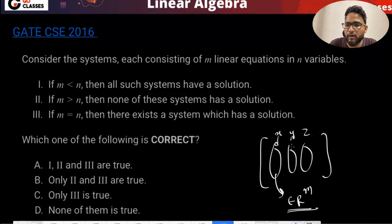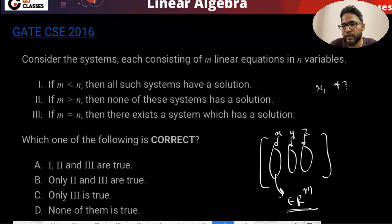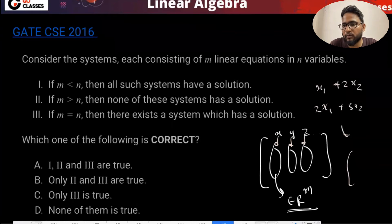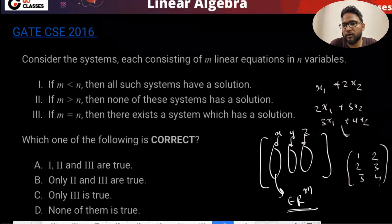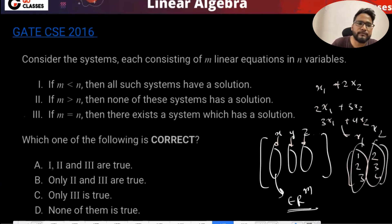Every variable represents just one column. So if you have x1 plus 2x2, and another equation 2x1 plus 3x2, and a third equation 3x1 plus 4x2, when you convert that there will be a column for x1 which is 1, 2, 3 and a column for x2 which is 2, 3, 4. Every variable represents just one column - this is the x1 column, this is the x2 column.